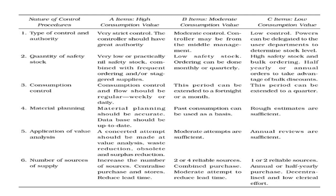Consumption control and flow should be daily or weekly for Group A items due to their high cost, every 15 days or monthly for Group B items, and quarterly for Group C items.